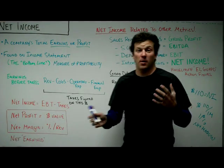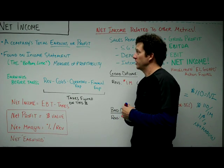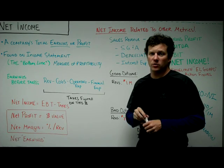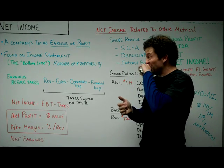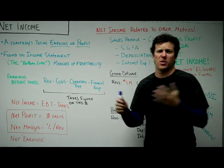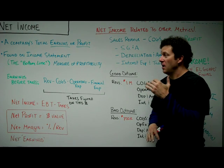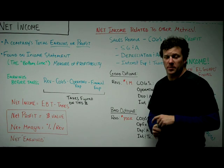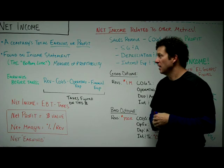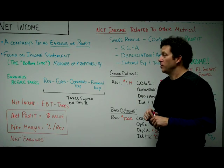Net income is an expression of a company's total earnings or profit. You've probably heard people refer to this as the bottom line — what's the bottom line, does that company make money? The reason they call it the bottom line is because net income appears very low on the income statement; it's literally the bottom line. It's a measure of profitability and general health of a company over a period of time.